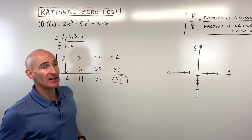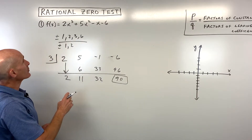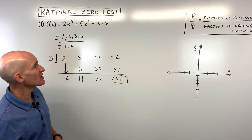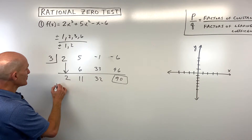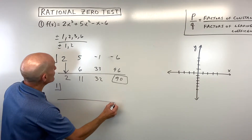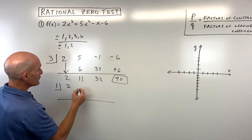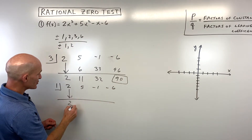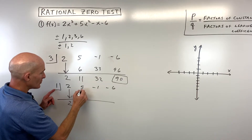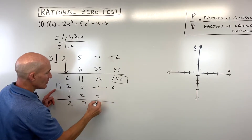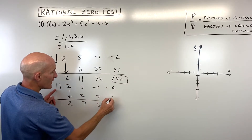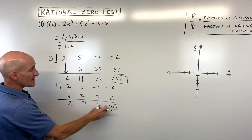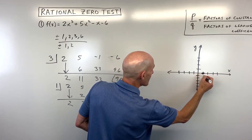Let's try another quantity. I normally start with smaller numbers because it makes calculations a little bit easier. Let's do 1. We take our coefficients: 2, 5, negative 1, and negative 6. Drop down the first number — 2 — then multiply on the diagonal, add straight down, multiply on the diagonal, add straight down, multiply on the diagonal, add straight down. Notice we're getting zero here. That tells us that 1 is a zero, and it's going to cross the x-axis right at 1.